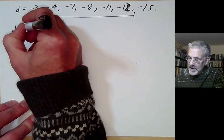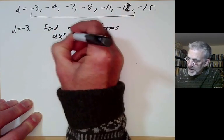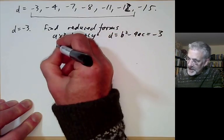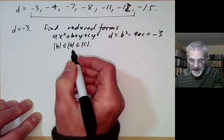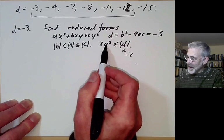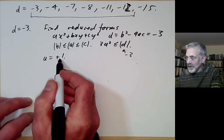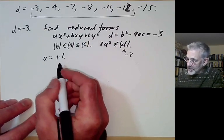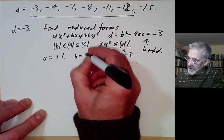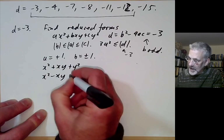Let's do the easy cases first. For discriminant d = −3, we find all reduced forms ax² + bxy + cy² with b² − 4ac = −3. Since 3a² ≤ |d| = 3, and the form is positive definite, we get a = 1. Then b² must be odd so b is odd, and |b| ≤ 1, giving b = ±1. This gives two possibilities: x² + xy + y² or x² − xy + y². But we can get from one to the other by replacing x with −y, so these forms are equivalent.